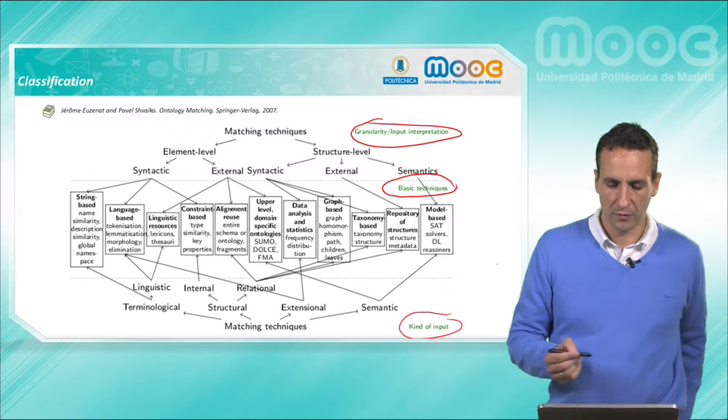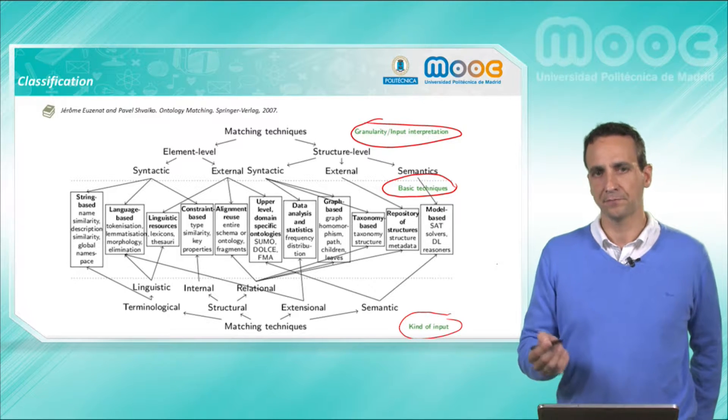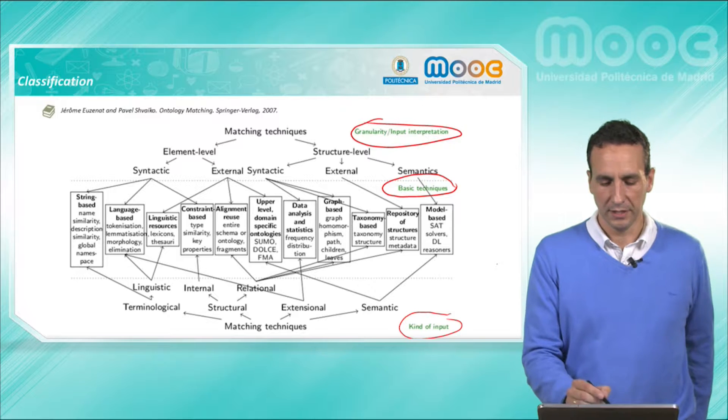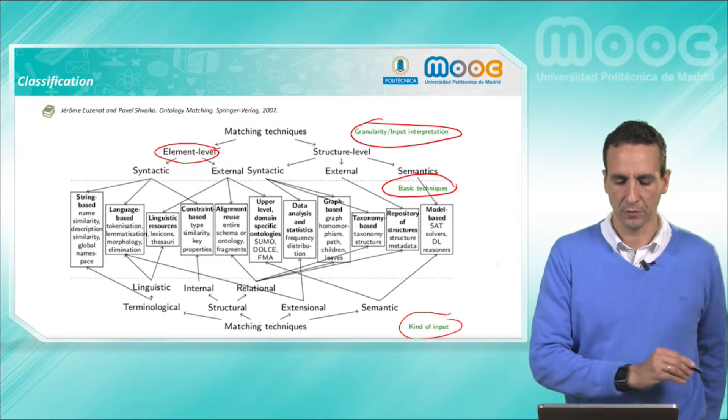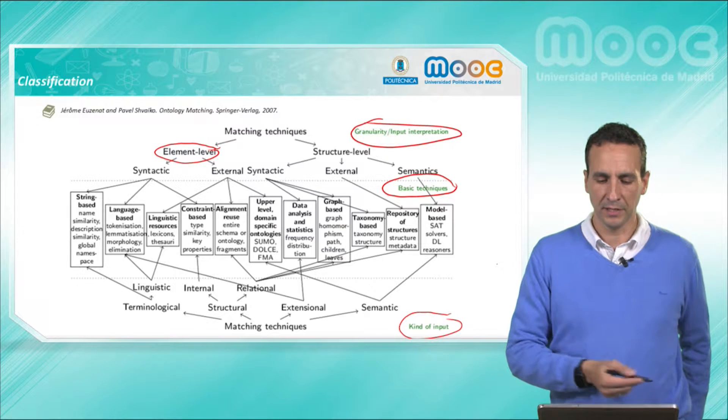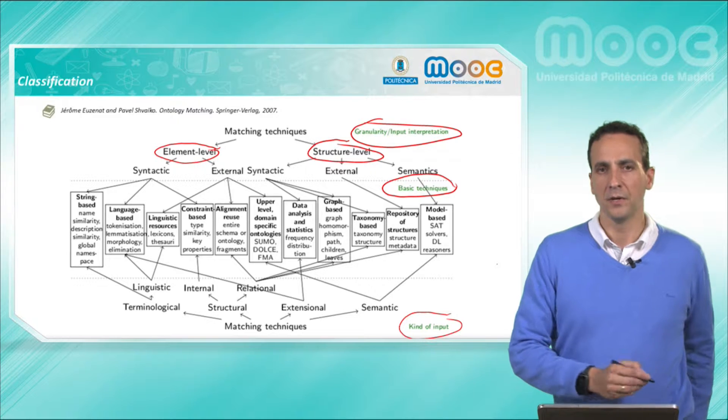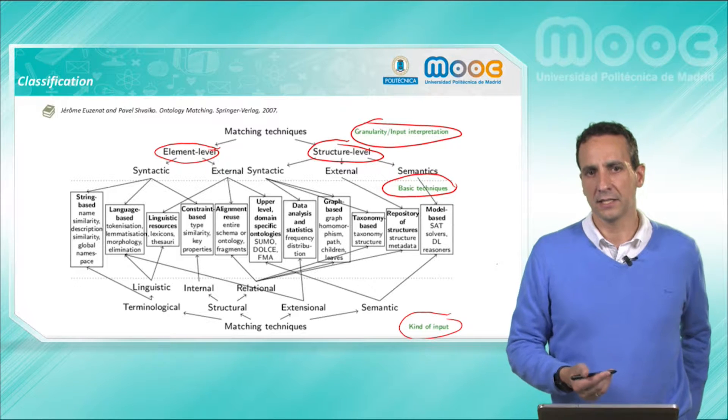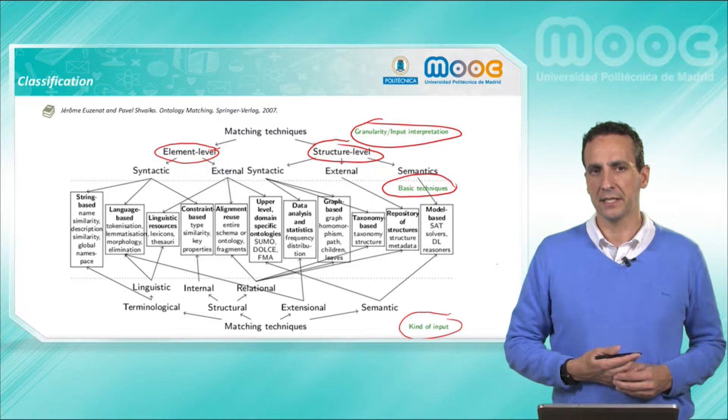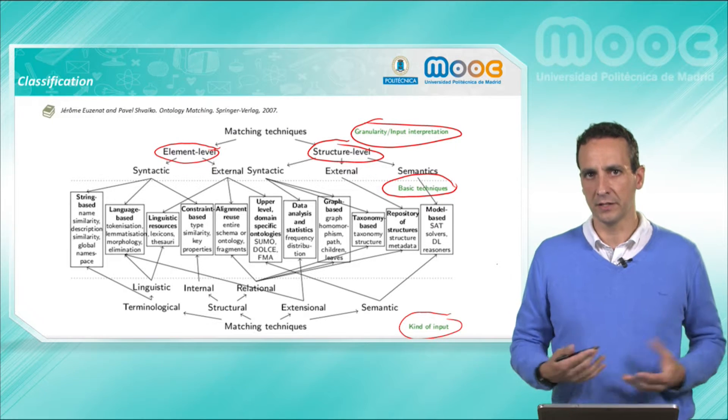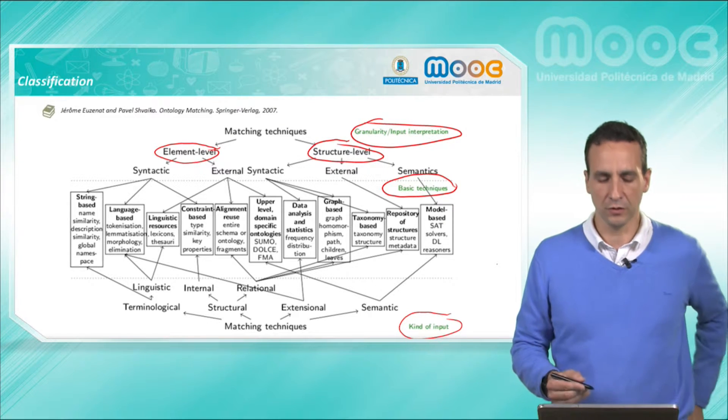If we briefly go back to the first one based on the granularity level, we see that there are two possible types of elementary techniques: element level and structure level. The first type corresponds to techniques that explore the elements of the ontology in isolation, and the second one, structure level, considers the ontology term in connection with the rest of the ontology.